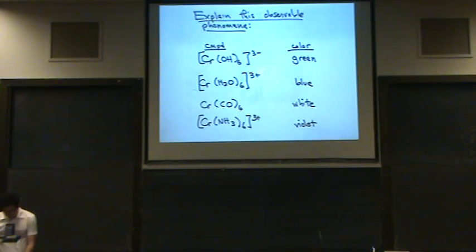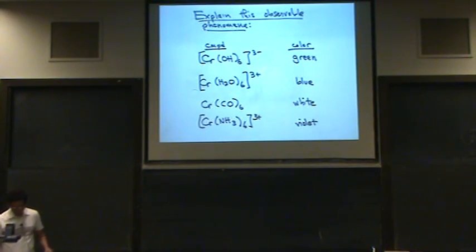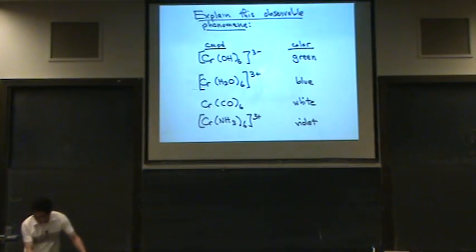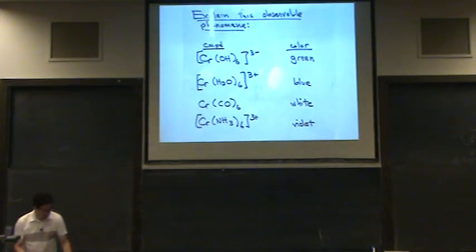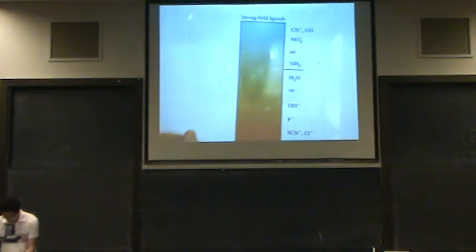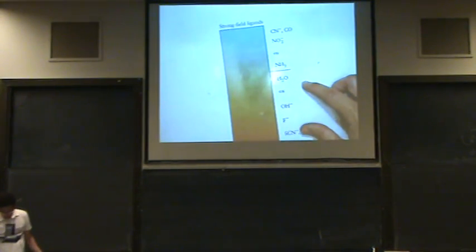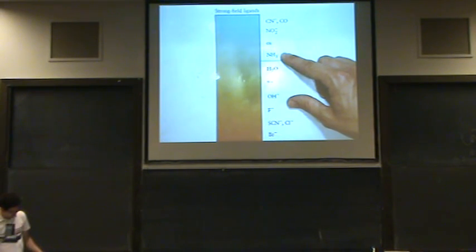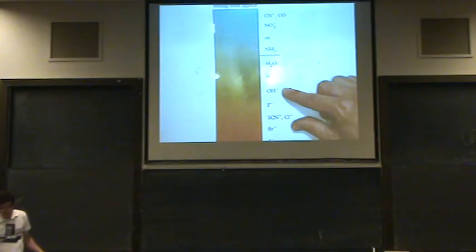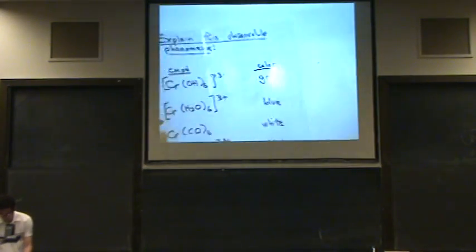So let's go to our spectrochemical series, and I want to rate these ligands. There's CO, there's H2O, there's OH, and there's NH3. So let's rank them from highest to weakest field. I can see that the CO is going to be first, then the NH3 will be the next highest, and then will be water, and then will be OH. Okay, so let me write that on my page.